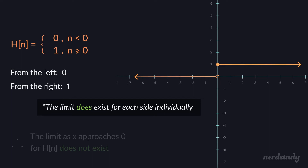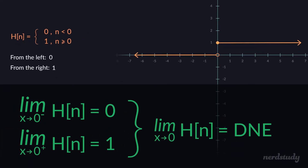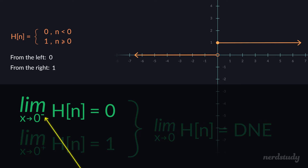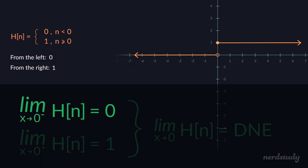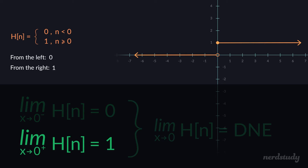Using limit notation, you can write the left-sided limit by placing a small negative sign next to the 0 in the notation. This denotes the limit from all x values approaching from below 0 — the left-sided limit is equal to 0. You can also write the right-sided limit using a positive sign, representing all x values approaching from above 0. That right-sided limit is equal to 1.